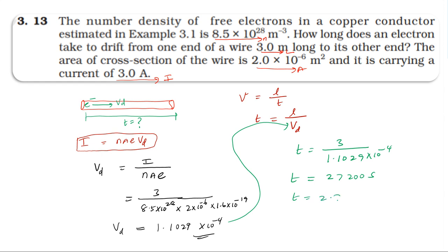Actually 2.72 into 10 power 4 seconds. Since one hour equals 3600 seconds, time equals 2.72 into 10 power 4 divided by 3600.